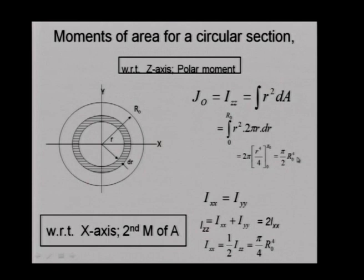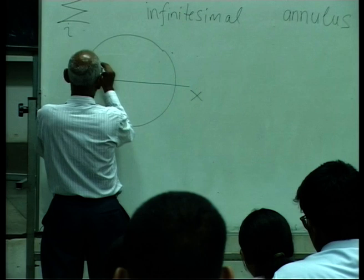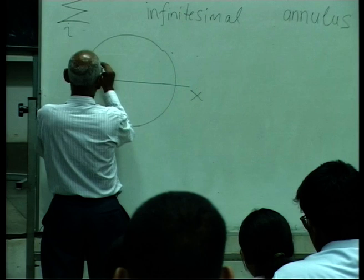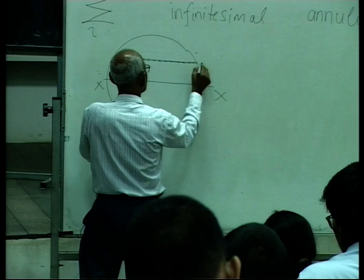Finding Ixx or Iyy for a circular section directly is not straightforward. Normally you draw strips parallel to the axis concerned — horizontal strips for Ixx — at distance y from the centroidal x axis, with thickness dy. The distance from the y axis to the edge of the circle at that level is a function of both y and r, making the integration more complex. This is set as a tutorial problem.